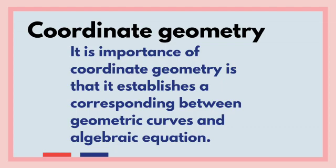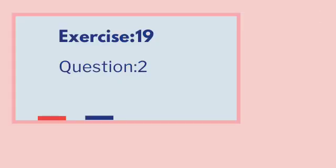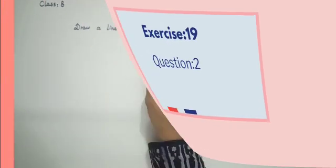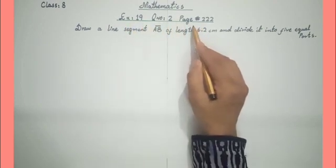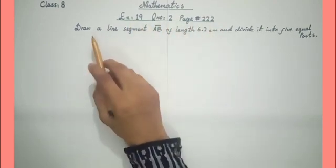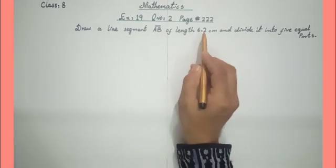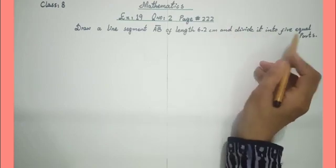Today we will solve some questions of Coordinate Geometry. For this, we will start Exercise 19. We will solve Q2 of Exercise 19, and move to our solution board. We will start Q2 of Exercise 19 from page 222. The question is: draw a line segment AB of length 6.2 cm and divide it into 5 equal parts.